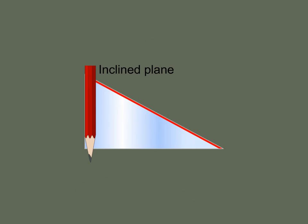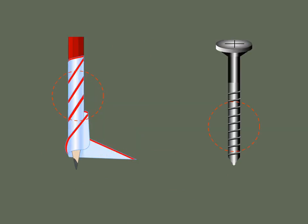Wrap the paper around the pencil as shown here. Doesn't this resemble the threads of a screw? This shows that screw is an inclined plane wound around a central pole.